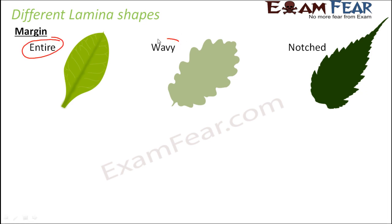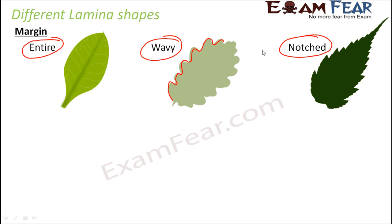The margin could also be wavy, as in a wave pattern. The margin could also be notched, where notches are seen very distinctly. So these could be the various types of margins for different leaves.